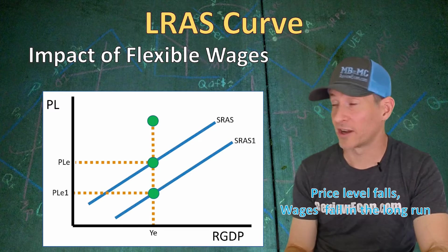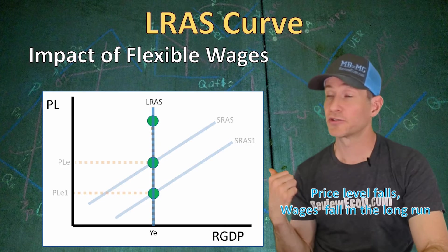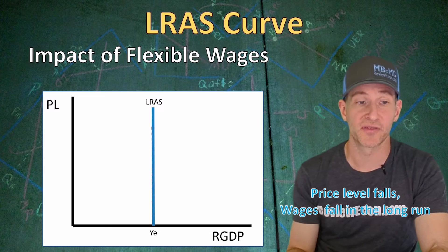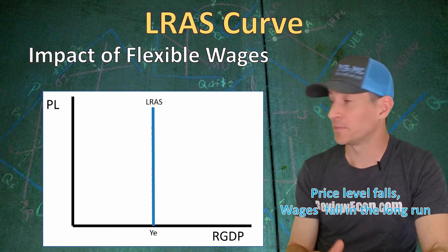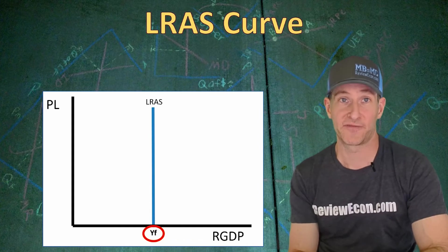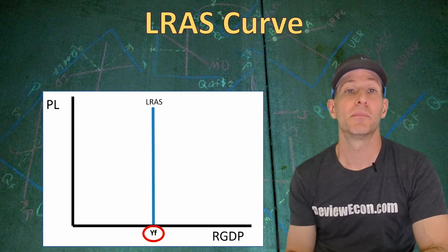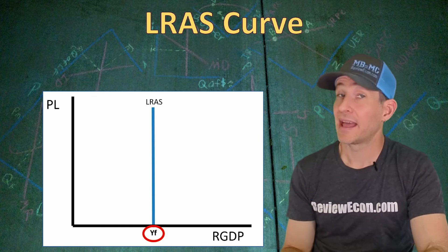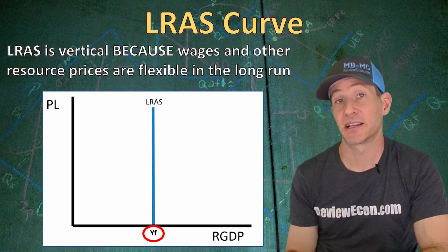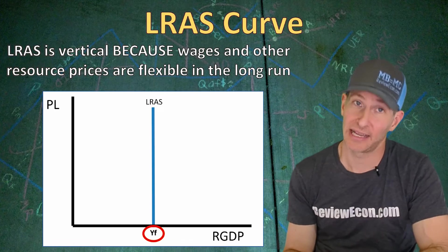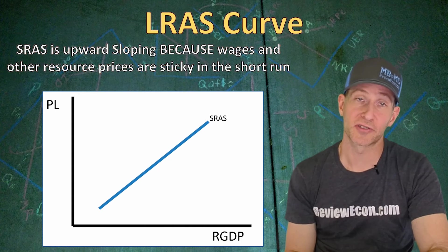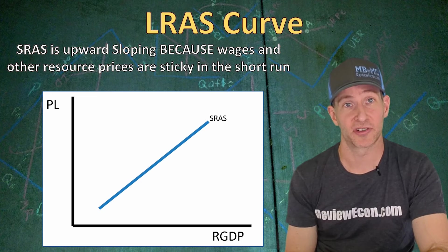In the long run, the real GDP output hasn't changed. Those three points are the long run aggregate supply curve. The quantity of real output below the long run aggregate supply curve is the quantity of output we get when the economy is at full employment, so we label it YF rather than YE. That's why the long run aggregate supply curve is vertical at the full employment level of output — because wages are flexible in the long run, while the short run aggregate supply curve is upward sloping because wages and other resource prices are sticky or inflexible in the short run.